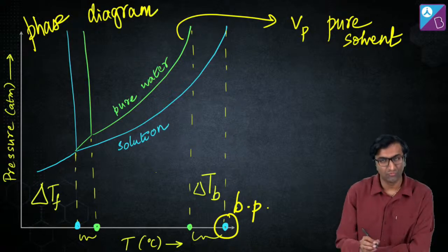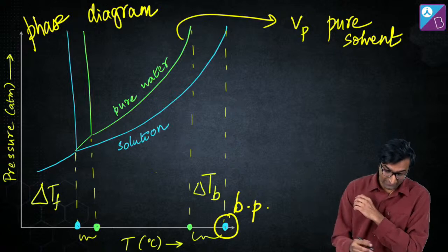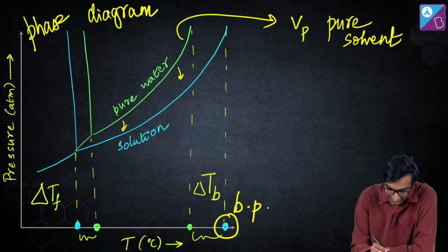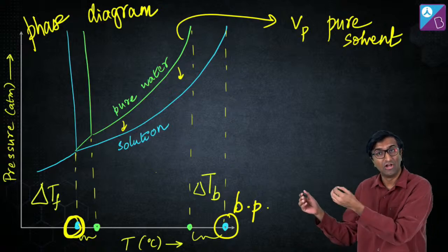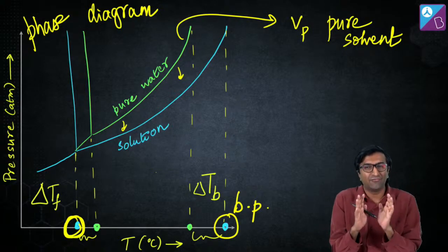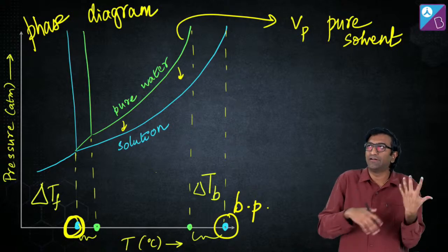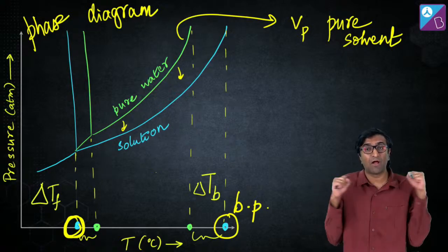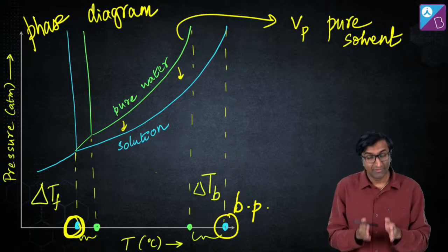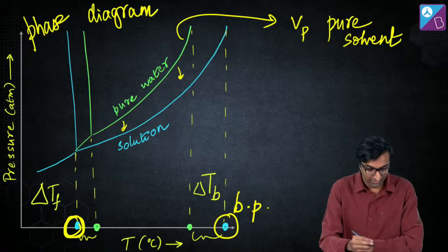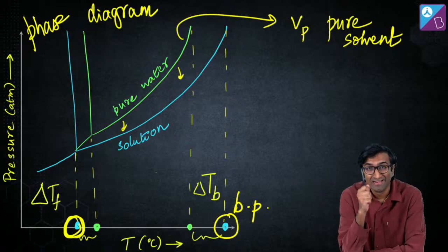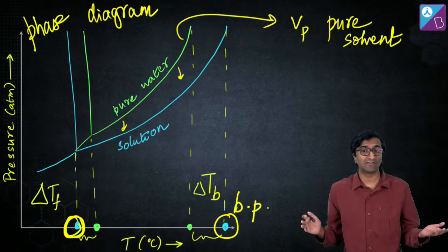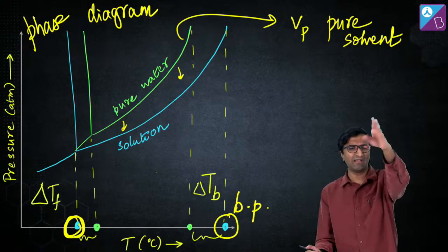The liquid phase boundaries expand on both sides — on the solid side as well as the vapor side — which is why there's a depression in freezing point. This graph hasn't been tested in JEE Main for some years; it did come in JEE Advanced a few years back. I just thought I'd start with some theory right away.